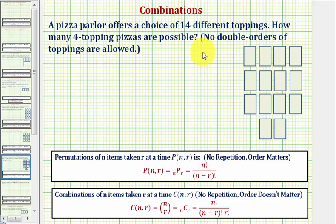Whenever we have a situation like this where we have n items and we're taking them r at a time, or in this case, 14 toppings four at a time, our first question should be: does the order matter?